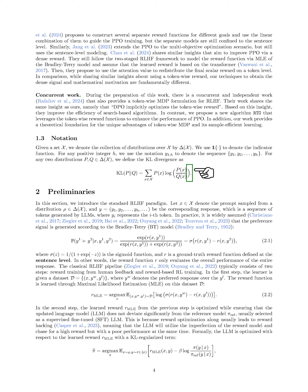In our practice, we assume that the preference signal follows the Bradley-Terry, BT, model. This model calculates the probability of one response being preferred over another given a prompt and the responses. The model uses a sigmoid function and a ground-truth reward function R defined at the sentence level to determine this probability. The reward function evaluates the overall performance of the entire response. The classical RLHF pipeline typically involves two steps: reward training from human feedback and reward-based RL training.